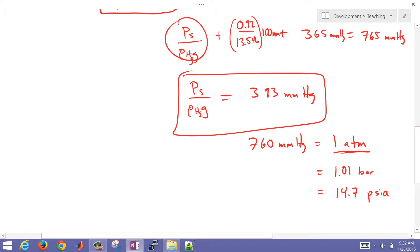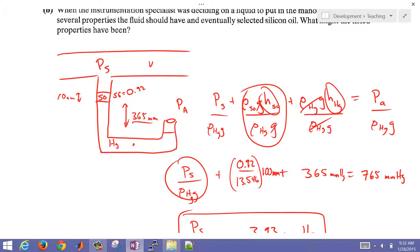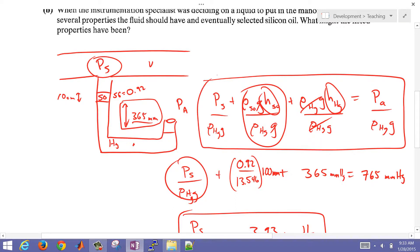This is the problem with the manometer. We can calculate the pressure inside this unit by looking at the difference in the level of the mercury plus the silicon oil that's there. This is the way to do the calculation, and we call this the head form of this equation.